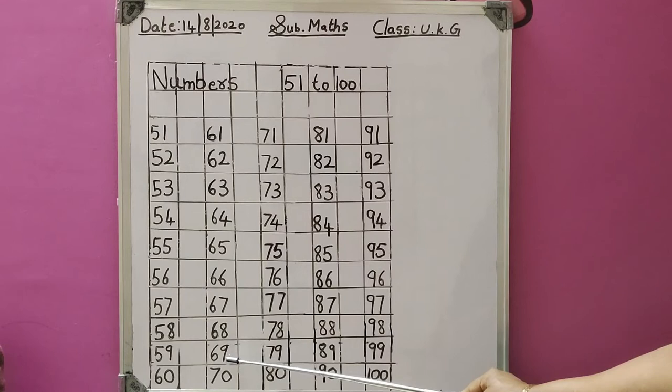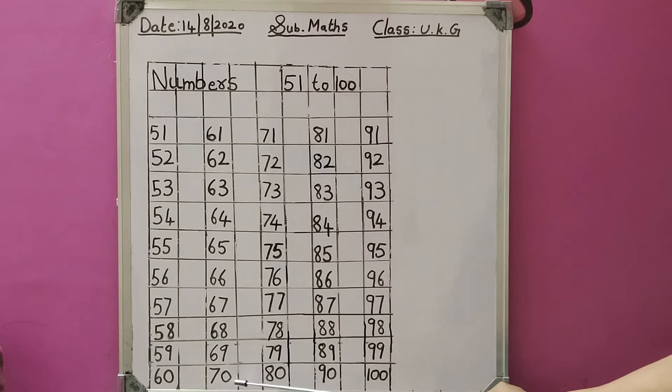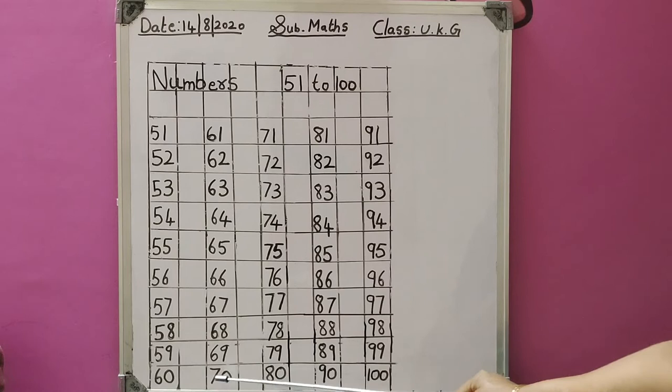After 60, leave 1 column. Then start in the next column: 61, 62, 63, 64, 65, 66, 67, 68, 69, 70. After 69: 70.